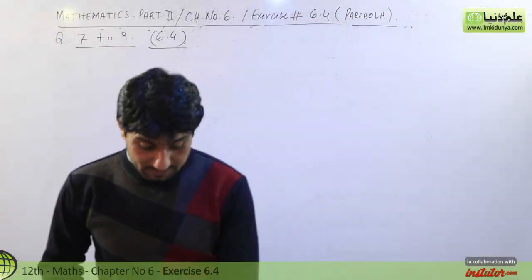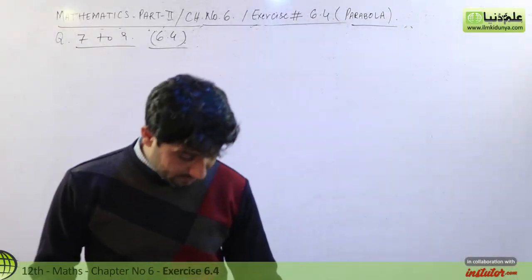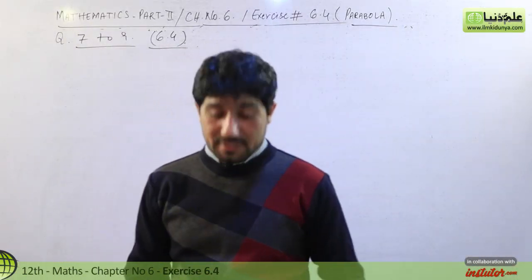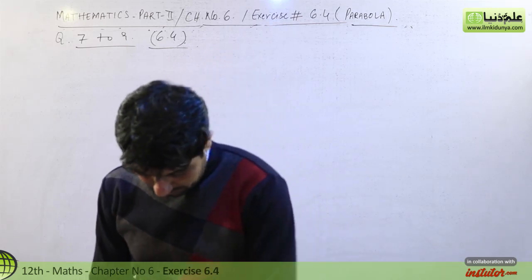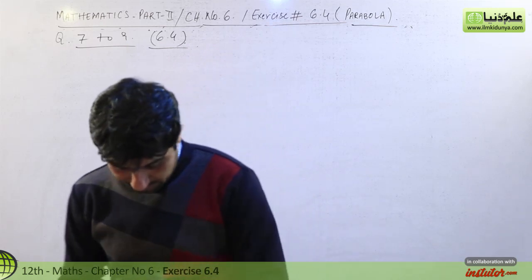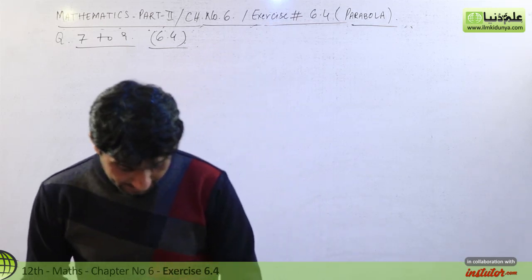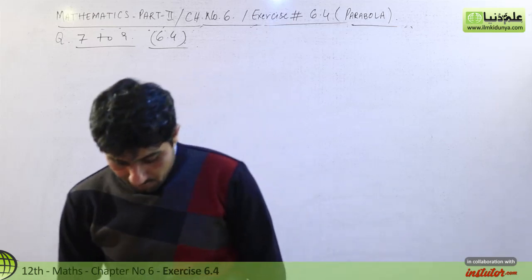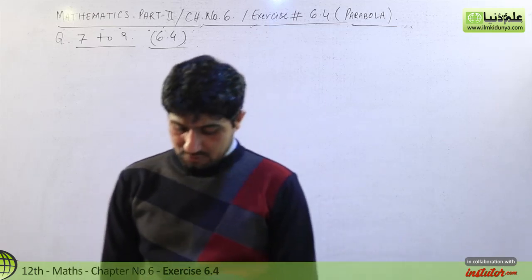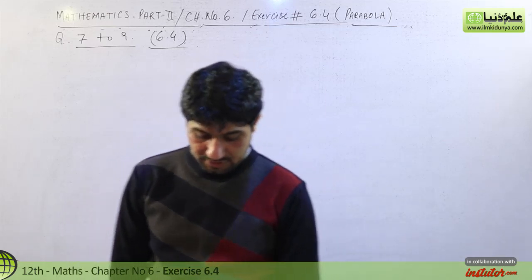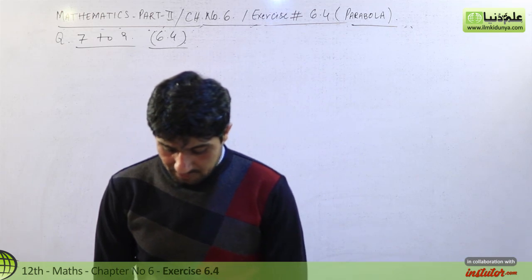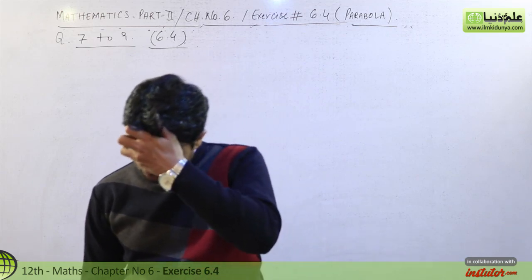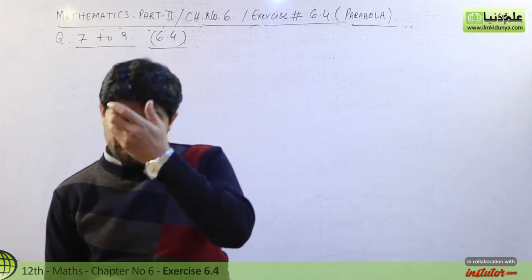As-salamu alaykum dear students, this is Mohamad Naveed Jafar. We will discuss exercise number 6.4, question number 7: find an equation of the parabola formed by the cables of a suspension bridge whose span is A meters and the vertical height of the supporting towers is B meters.